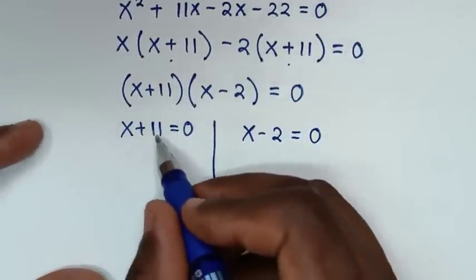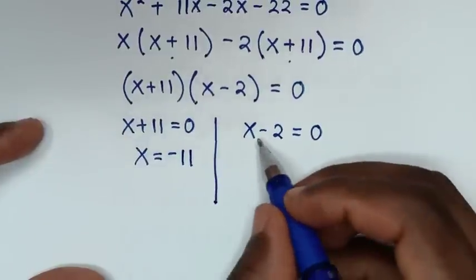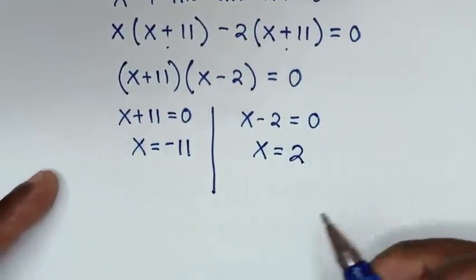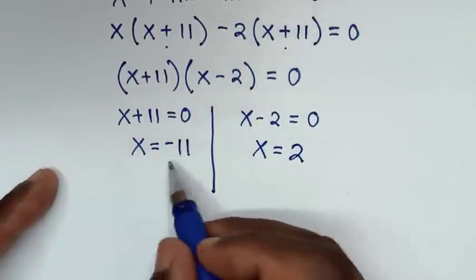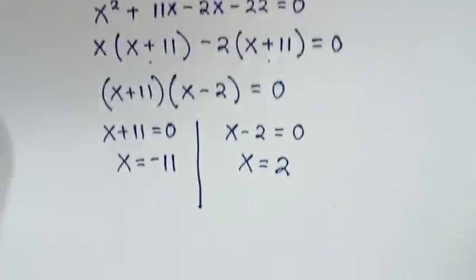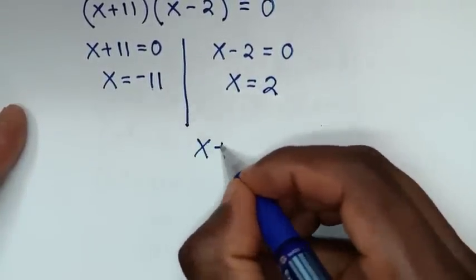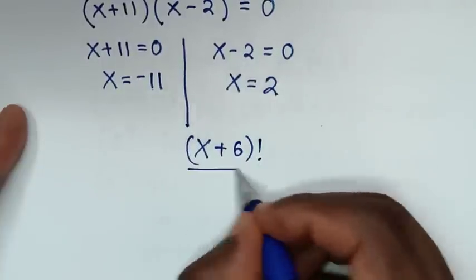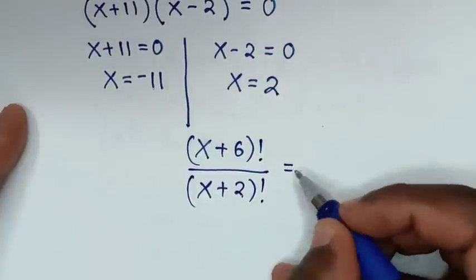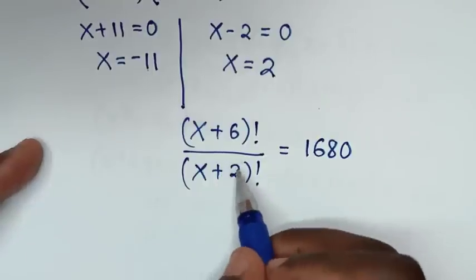From x+11=0 we get x = -11, and from x-2=0 we get x = 2. Now referring back to our original problem: (x+6)! / (x+2)! = 1680, we check which value of x is valid.